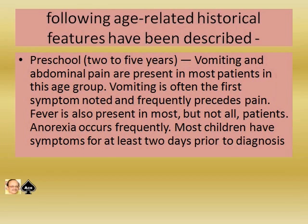In preschool children between 2 to 5 years, vomiting and abdominal pain are present in most patients. Vomiting is often the first symptom noticed and frequently precedes pain — so first vomiting, then pain. Fever is also present in most but not all patients. Anorexia occurs frequently and most children have symptoms for at least 2 days prior to diagnosis.